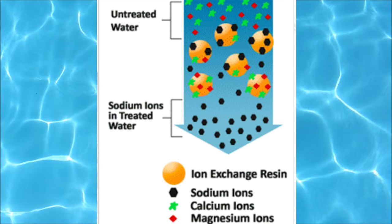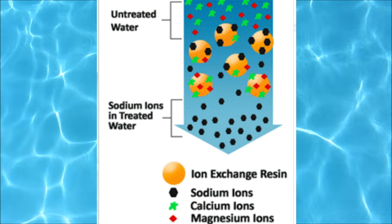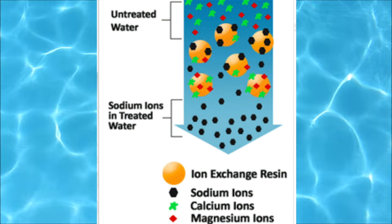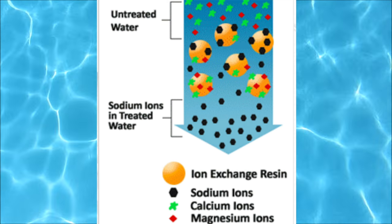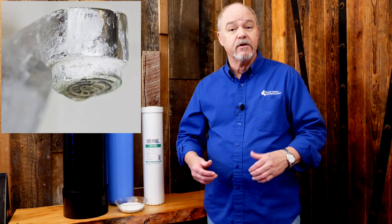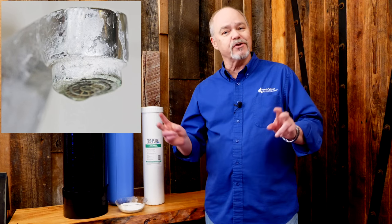A water softener works by taking the hardness minerals out of the water, and it does that through a process called ion exchange, where the hardness ions are collected in a resin bed. A salt-free water conditioner doesn't take the minerals out of the water — it actually alters them physically and turns them into little micro crystals. In that shape, they're unable to come out of solution and create scale. So quite frankly, the best term we can use for a salt-free water conditioner would be a scale inhibitor.